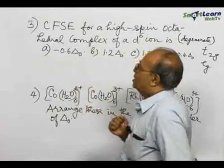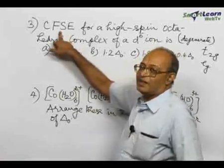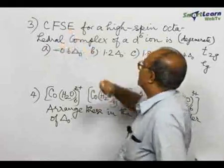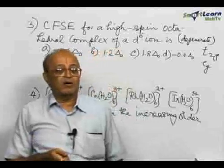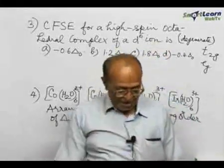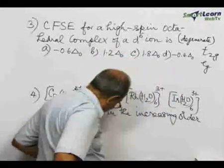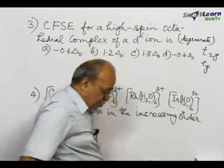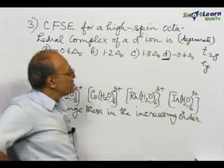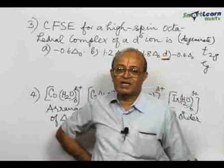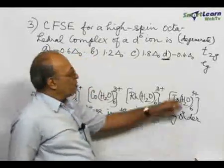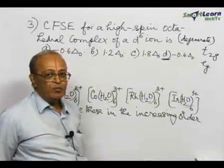Now consider the crystal field stabilization energy — CFSE — for a high spin octahedral complex. Let us consider a d6 ion in an octahedral complex. For a high spin complex, we need to determine how many electrons are present in T2g and how many in eg.